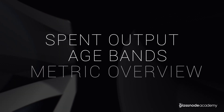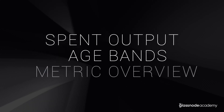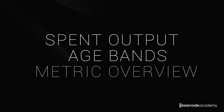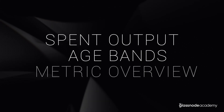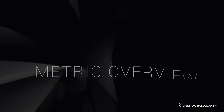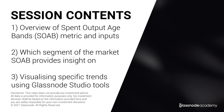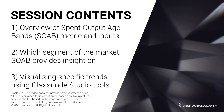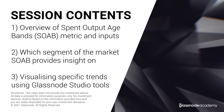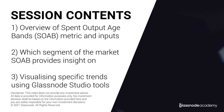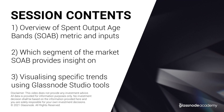Hello and welcome to Glassnode Academy. Today we're looking at a Bitcoin metric called the spent output age bands, which provides a macro overview of the aggregate ages of different UTXOs that are spent on any particular day. We'll start with an overview of the metric, then look at how we consider it in market analysis, and then use Glassnode Studio to visualize and understand different trends and spending patterns on chain.